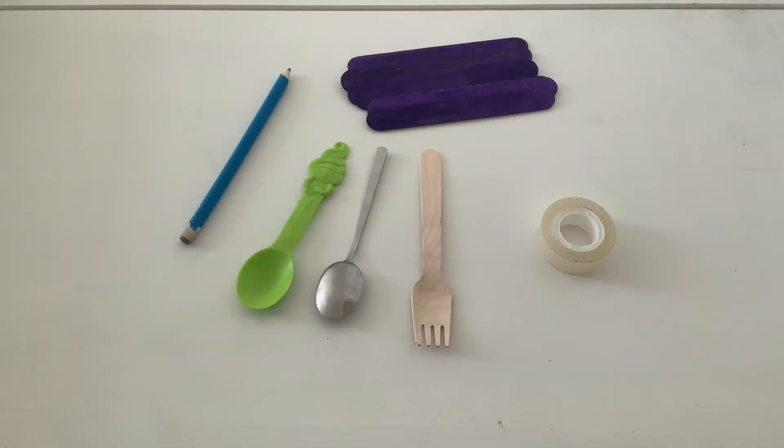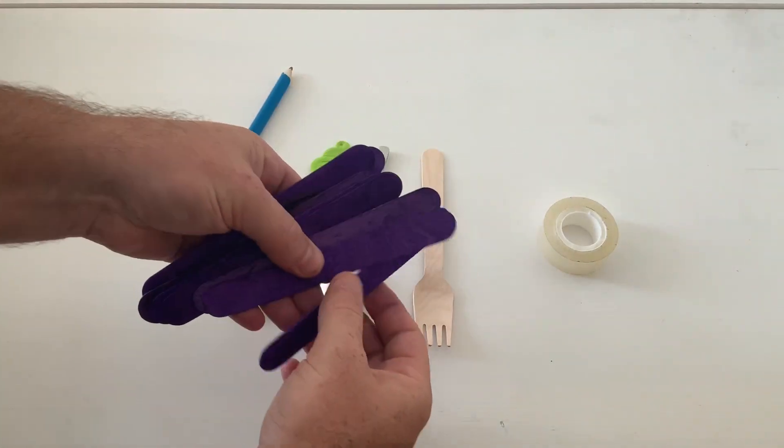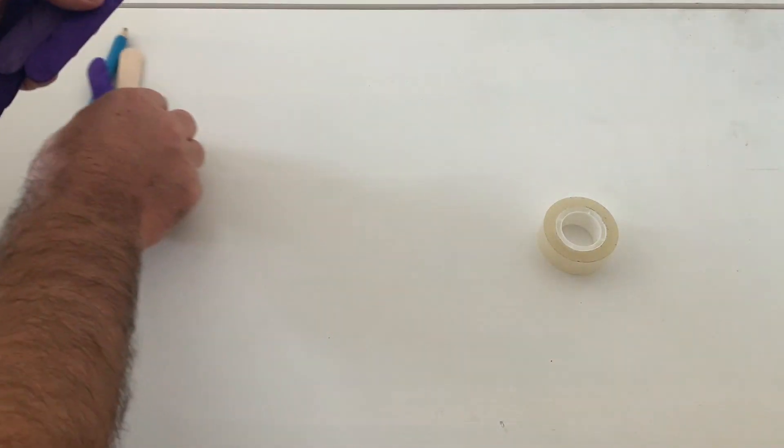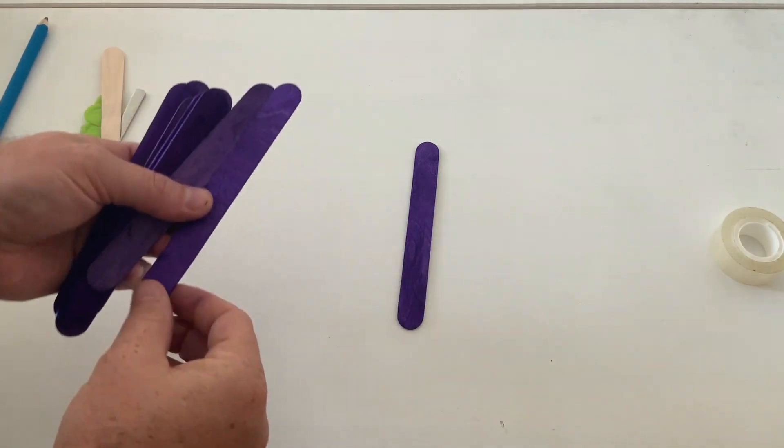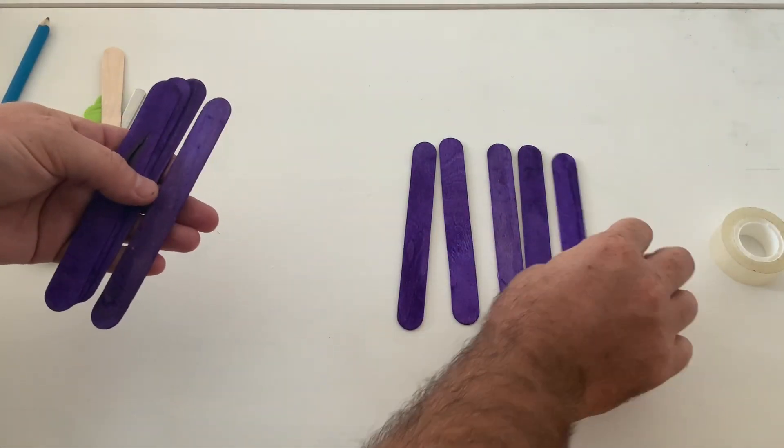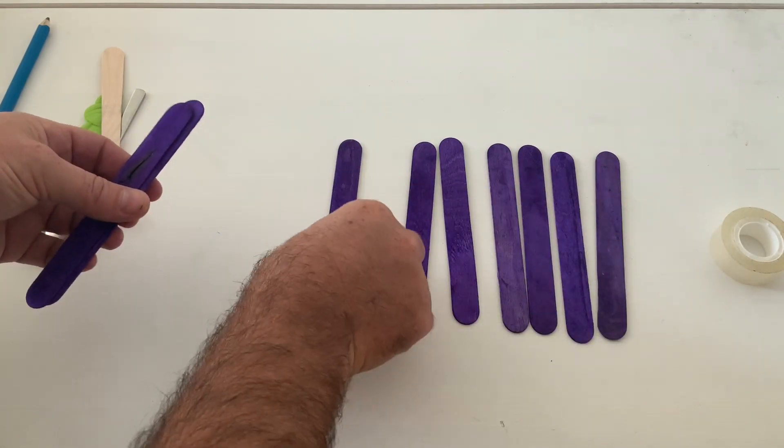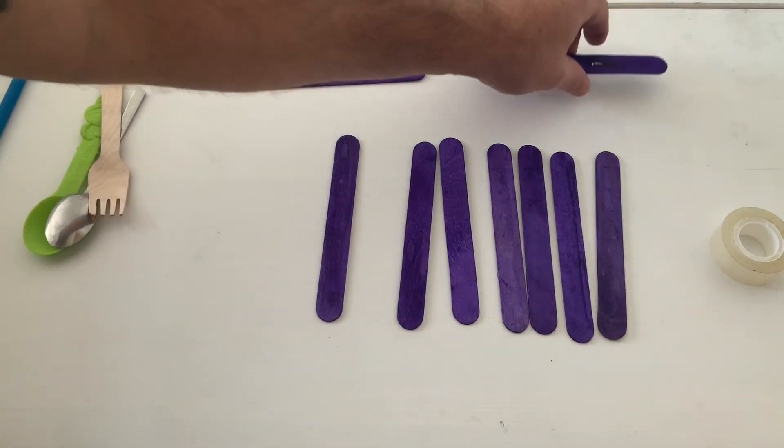To make this, you will need lollipop sticks or a pencil, some materials to test. I'm using spoons and sellotape. The first thing we need to do is take our lollipop sticks and we're going to build a base. I'm going to count out my lollipop sticks. One, two, three, four, five, six, seven, eight, nine.